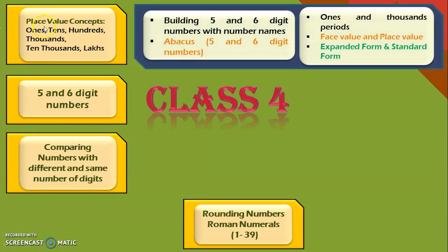Now let us see what topics we will be seeing under the place value concepts. Here we will learn to build five and six digit numbers along with their number names, then deal with activities related to five and six digit numbers on an abacus. In class four we will be seeing something new: ones and thousands periods. To make it easy to read large numbers, the digits are divided into periods separated by commas. We will then do activities related to face value and place value concepts and also learn to write large numbers in expanded form and standard form.